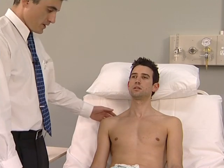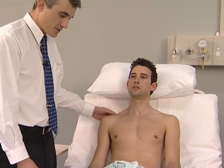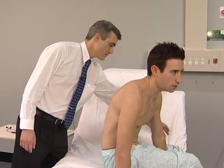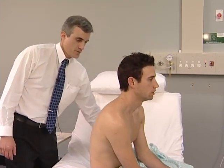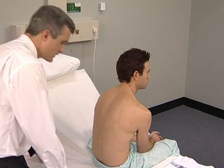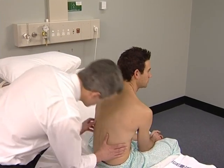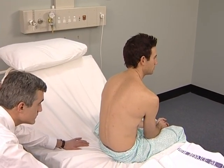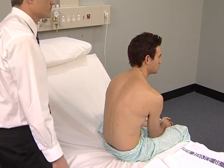Most clinicians examine the back of the chest next, as there are likely to be more signs of lung disease there. Sit the patient over the edge of the bed. Look at the shape of the chest and spine, and look for thoracotomy scars that may indicate previous lung surgery.